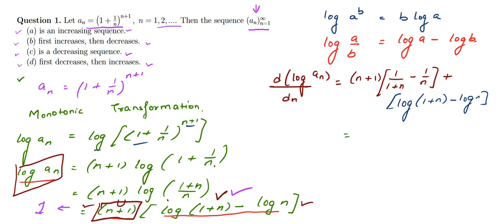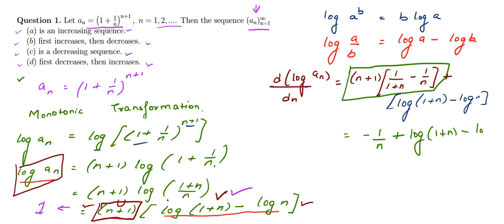Simplifying, we get: d(log a_n)/dn = −1/n + [log(1 + n) − log(n)]. Here we have a negative term −1/n, but we still need to determine the sign of the bracketed expression [log(1 + n) − log(n)].